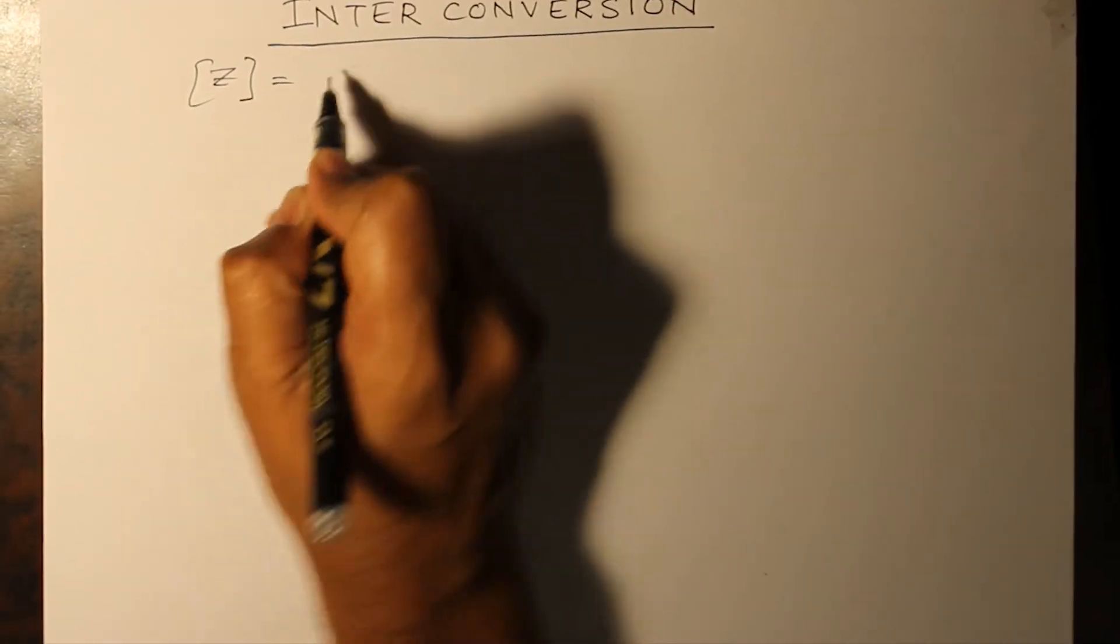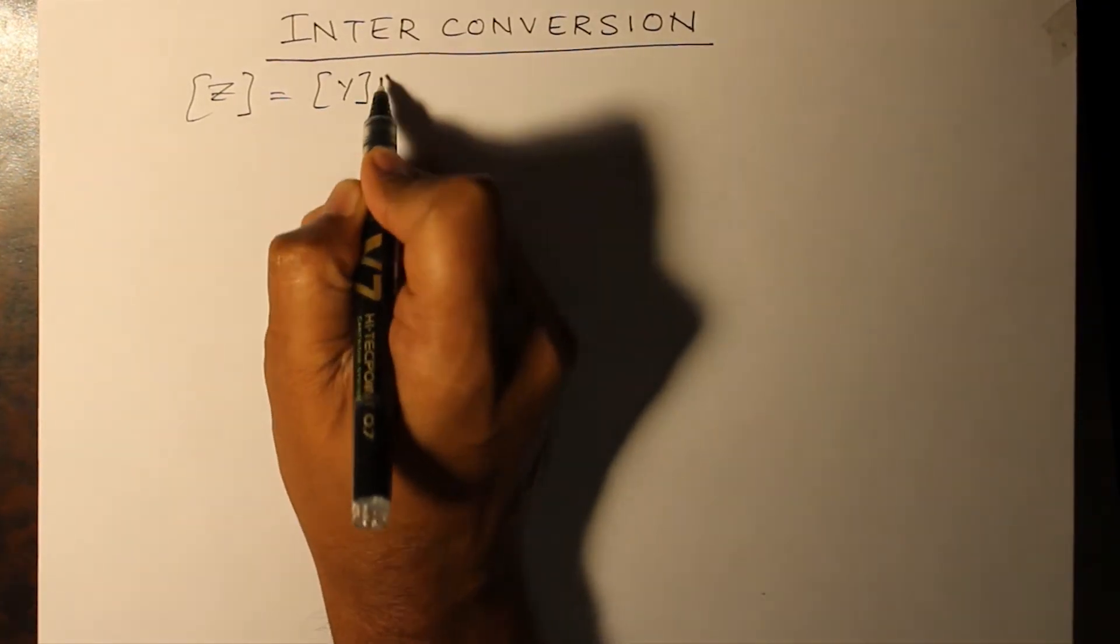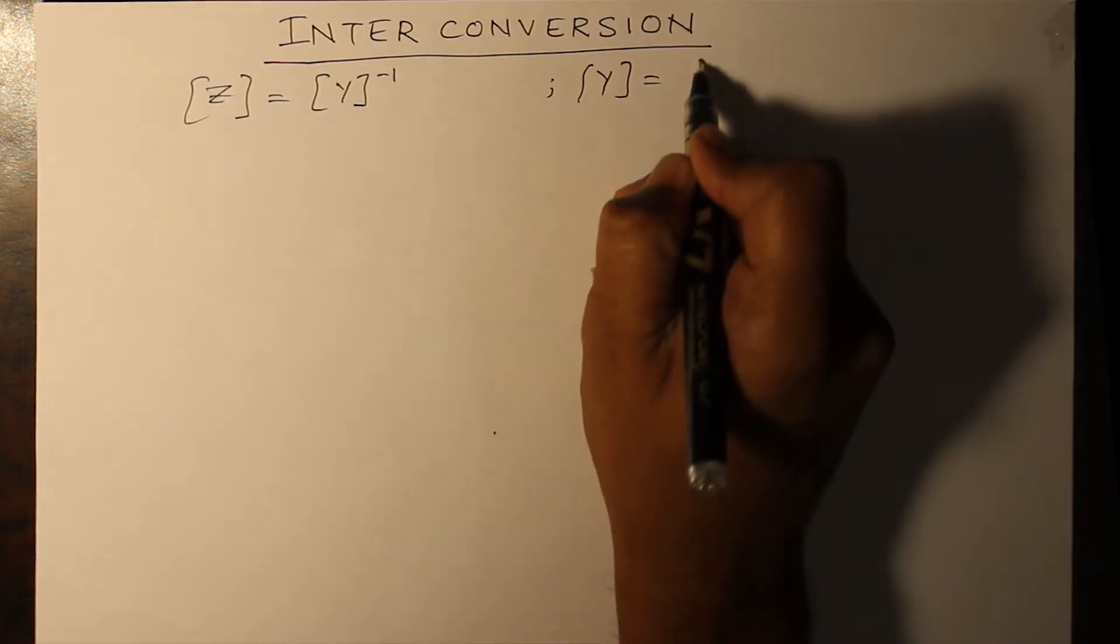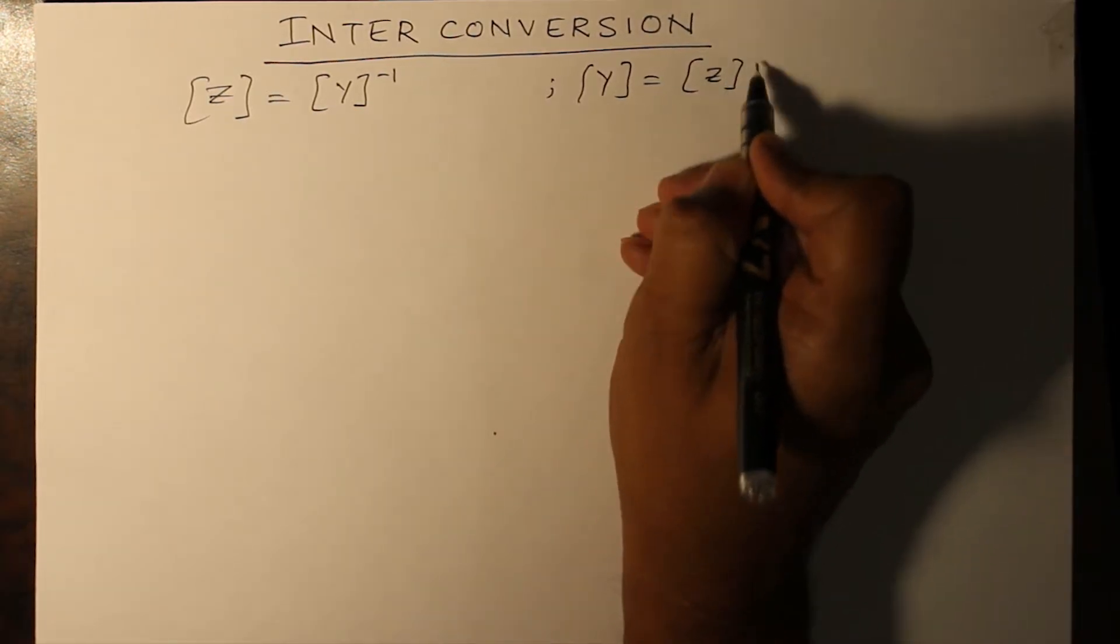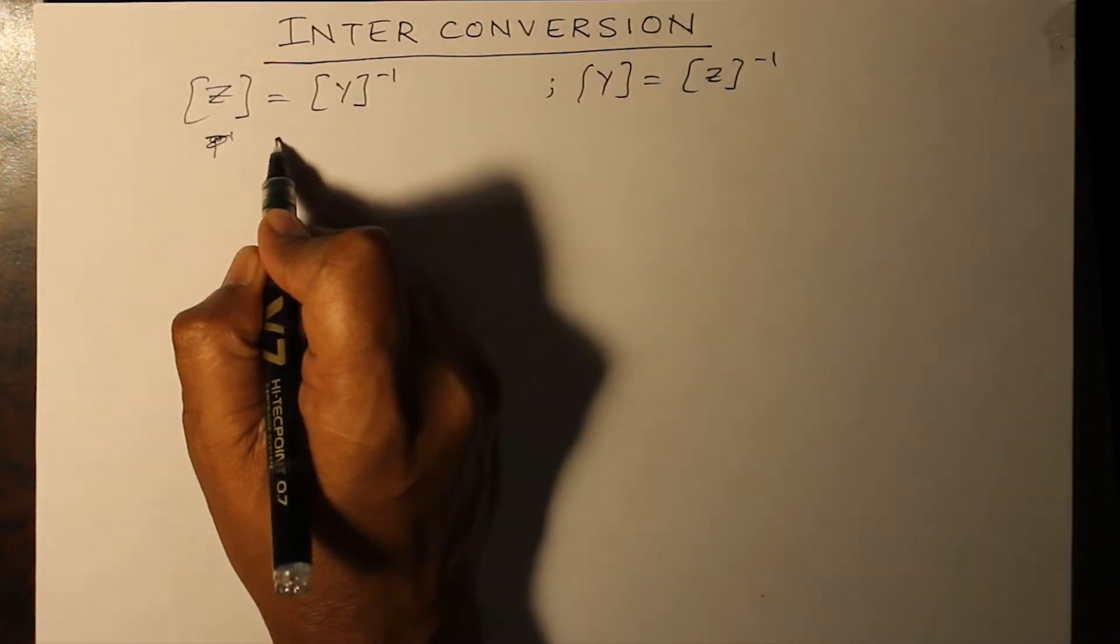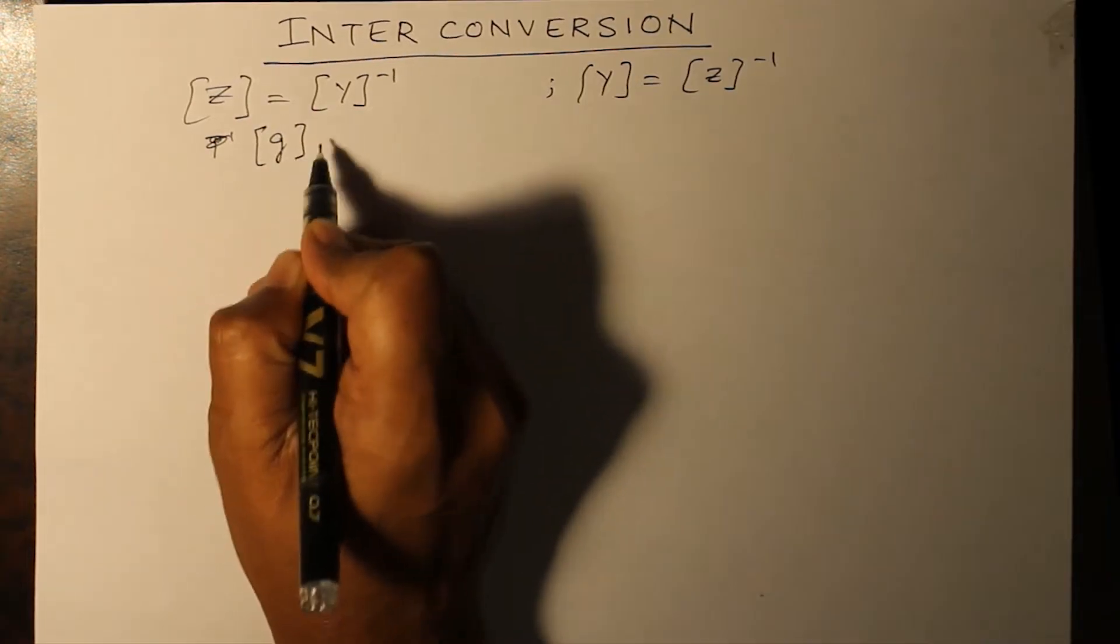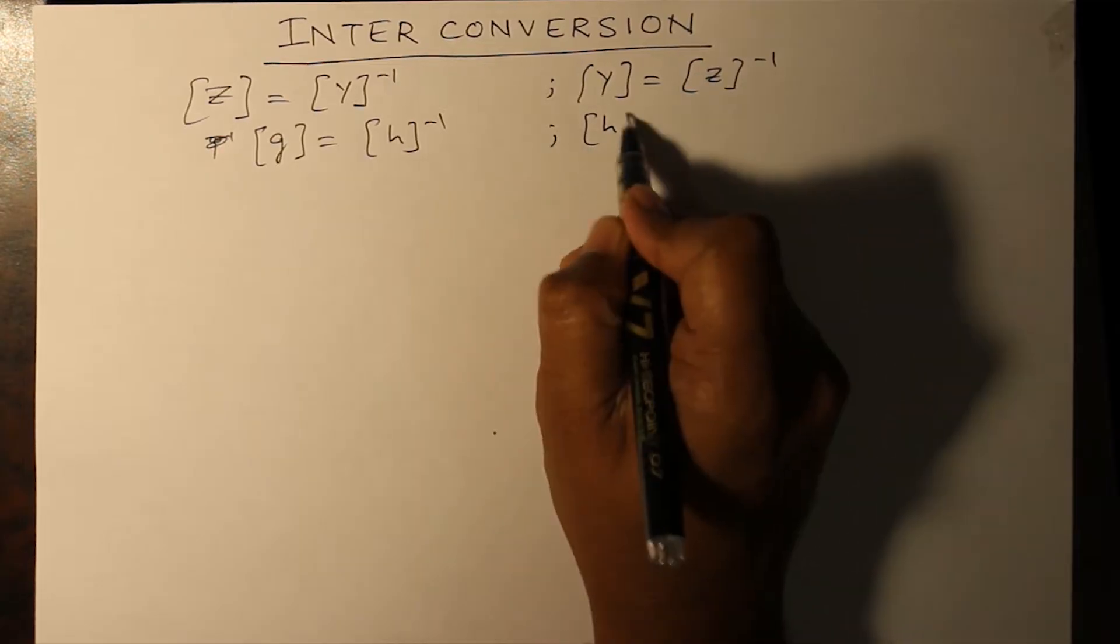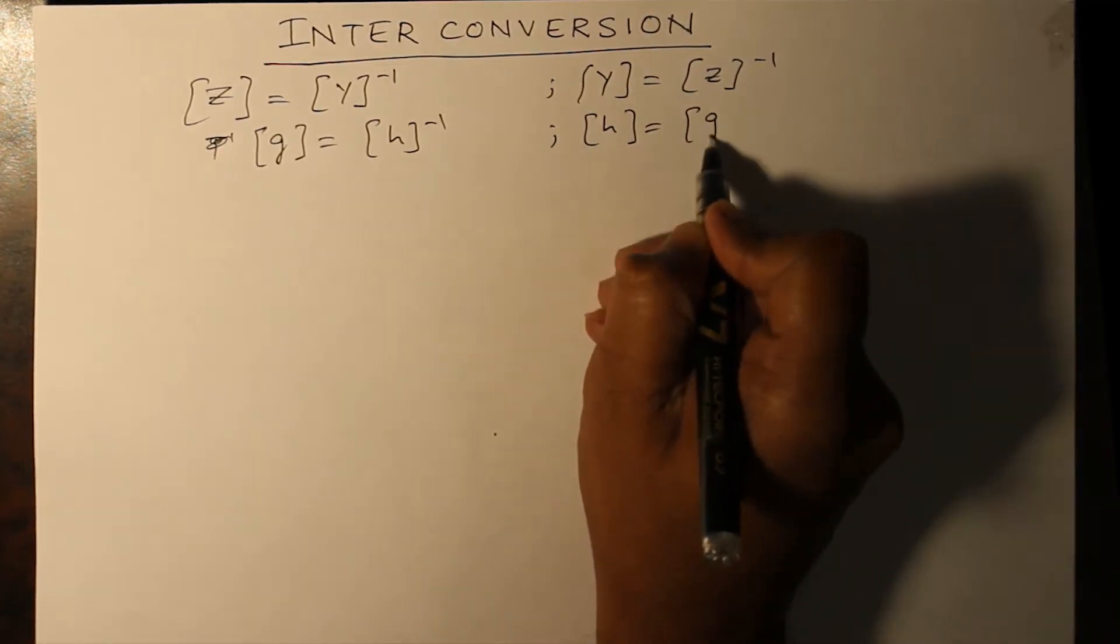Z parameter is equal to Y parameter inverse. Y parameter is equal to Z parameter inverse. Similarly, G parameter is H parameter inverse, and H parameter is G parameter inverse.